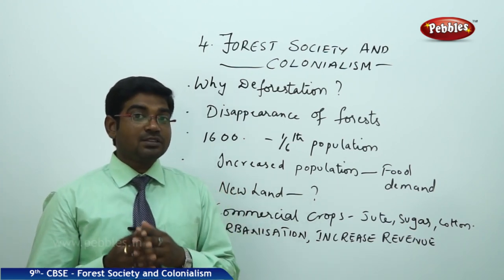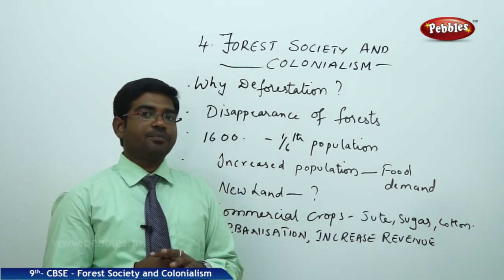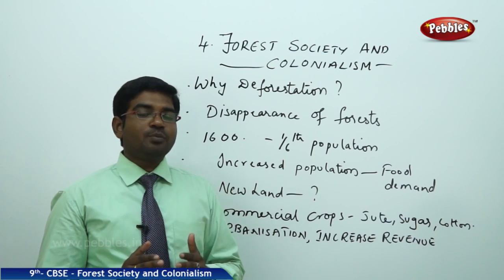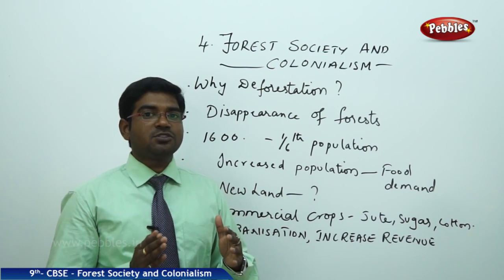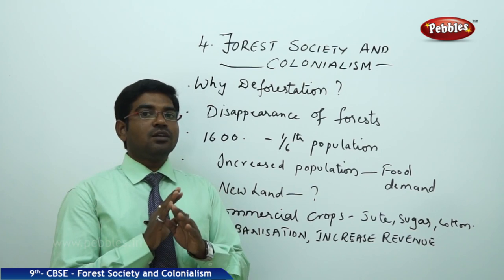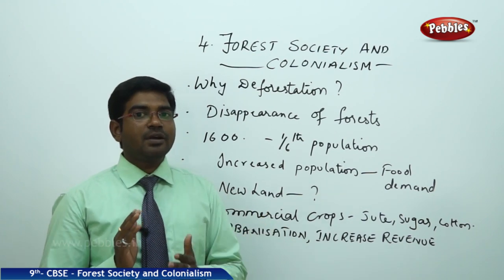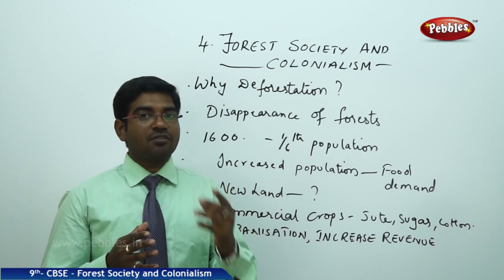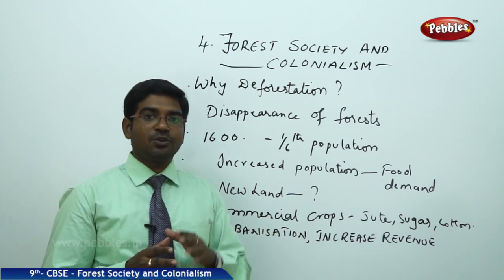Commercial cropping — whatever cultivation is done for earning huge amounts of profit — is known as commercial cropping. Major commercial crops are jute, sugar, cotton, wheat, etc. These were initially encouraged by the Britishers. They also thought that forests were waste and not at all useful. If you cleared the forest and brought it under agricultural use, they could collect tax from it, which automatically generates revenue for the Britishers. So in this process, they started to give permission for people to cut the forest.